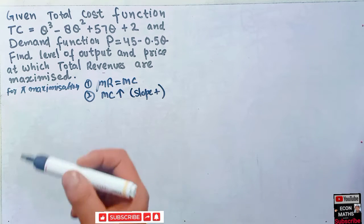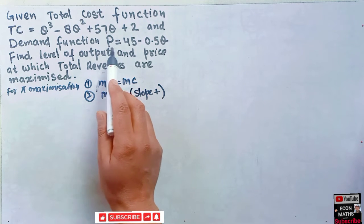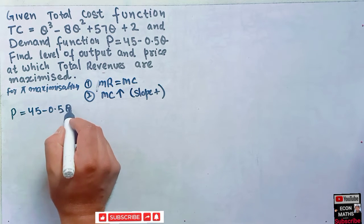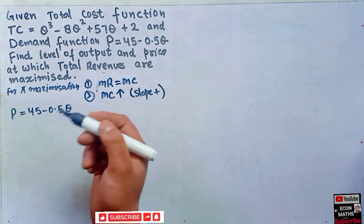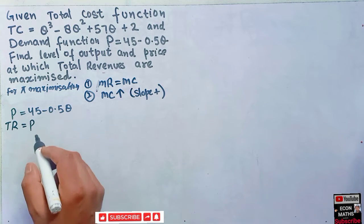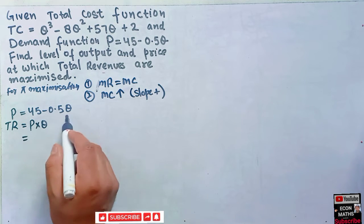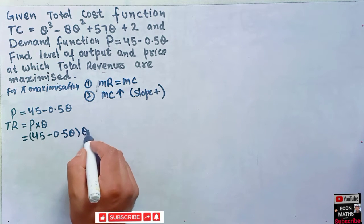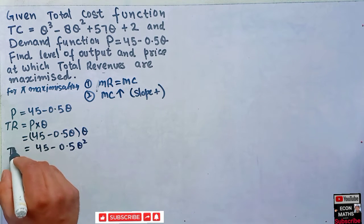Since the question asks for revenue maximization, we will focus only on that. First, I'll write the demand function: P = 45 - 0.5Q. Now we find total revenue. Total revenue is simply price times quantity, so TR = (45 - 0.5Q) × Q = 45Q - 0.5Q².